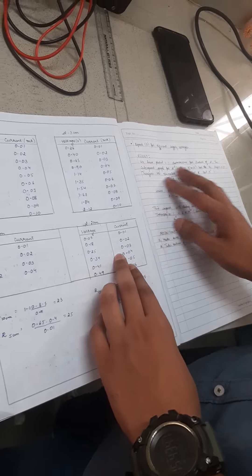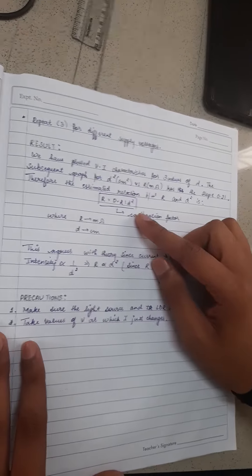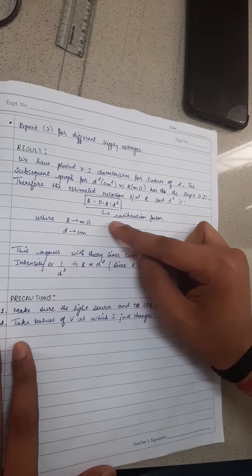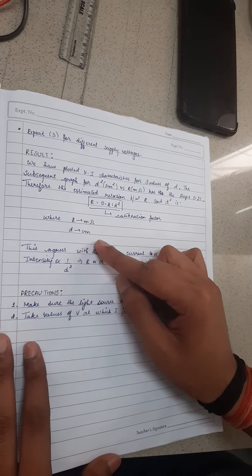After that, when we find out the values from different calculations, we get the resistance as 0.21 d squared. The resistance is in milliohms and d is in centimeters.